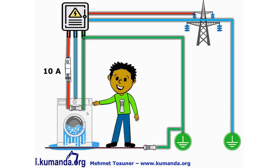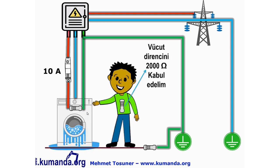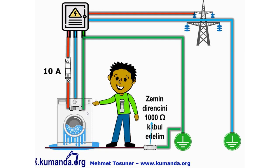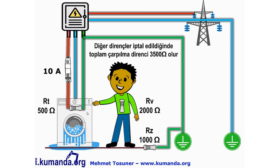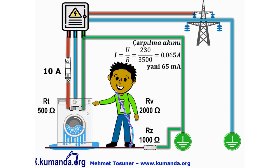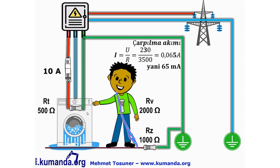İnsan vücudu 1000 ile 3300 Ω arasında dirence sahiptir; 2000 Ω kabul edelim, 1000 Ω zemin direnci olsun. Toplam 3500 Ω dirençte 230/3500 ≈ 65 mA akım kişi üzerinden geçer. 65 mA insan için zarar verici bir akım değeridir.